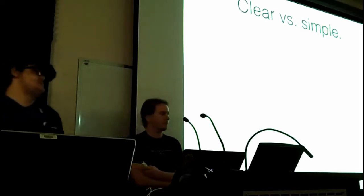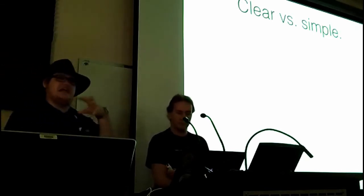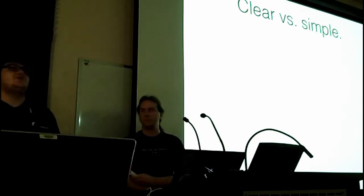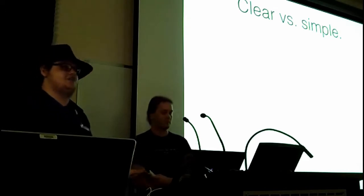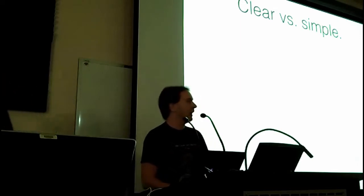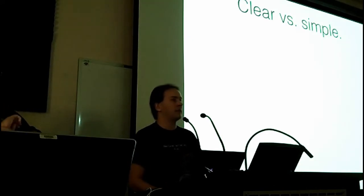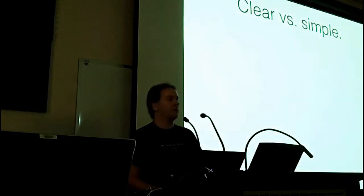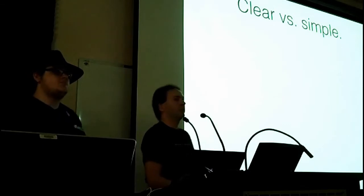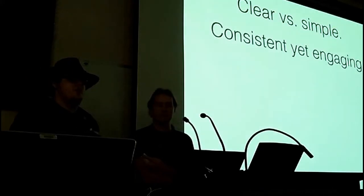Some tenets of Android app design that Google puts forth: the first one we're going to look at is clear versus simple. Clear versus simple basically means that Google recommends that when you're designing an Android app, you should favor something being really clear over something being simple. People have a really strong tendency to think these are the same thing, but they're not. You can have lots of functionality within an application, but provided it's presented in a clear way that users can see easily, this is far more sensible than reducing all the functionality and just presenting it like they're idiots.